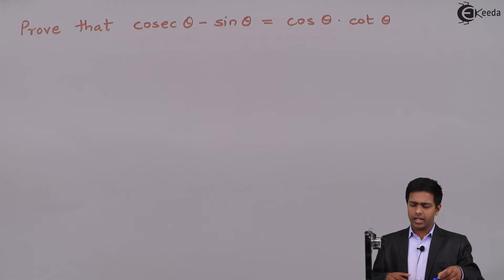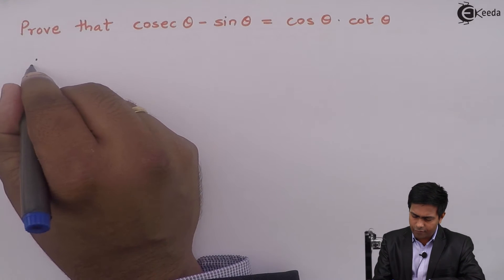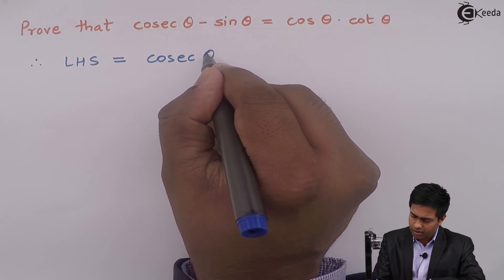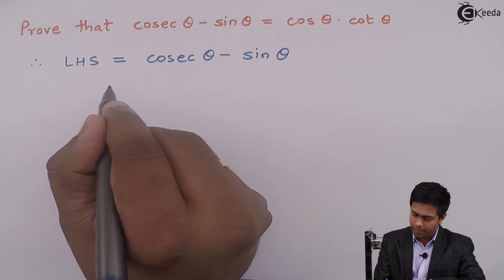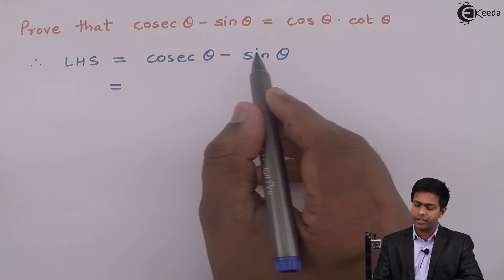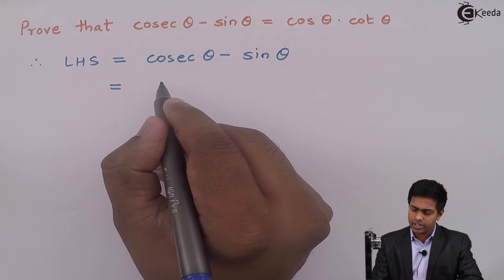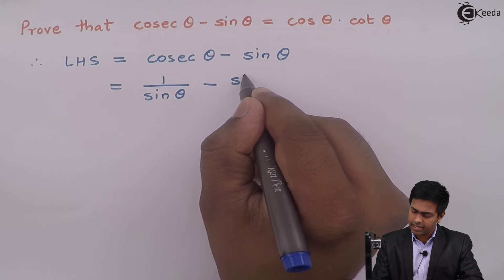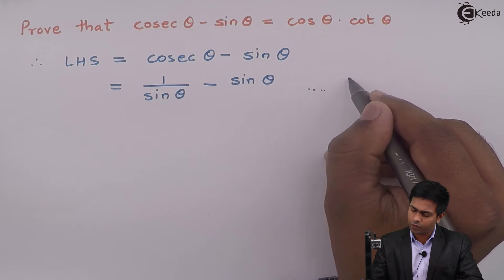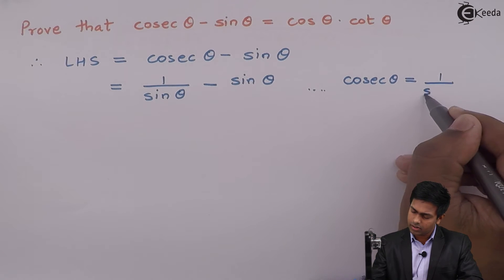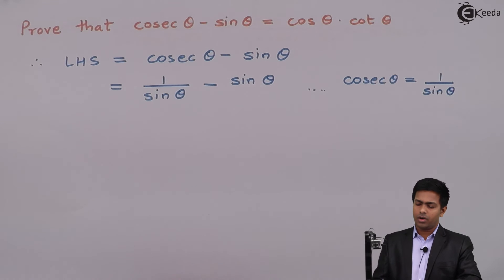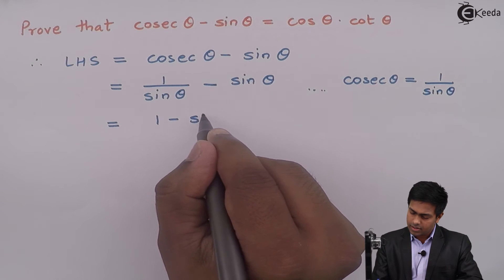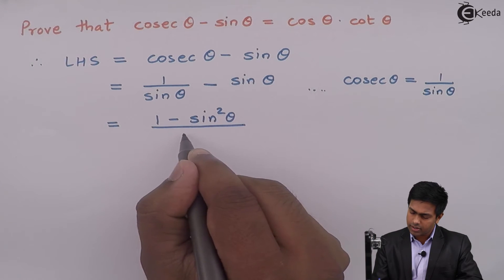Therefore, LHS, that is left hand side, is equal to cosec theta minus sin theta. Now, I will convert everything into sin and cos. Cosec theta we know is 1 upon sin theta, minus sin theta as it is. Here I am applying the formula of cosec theta which is 1 upon sin theta. Now we can do the cross multiplication, so we will get 1 minus sin square theta upon sin theta.